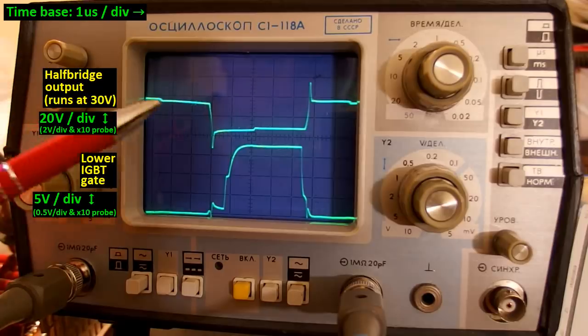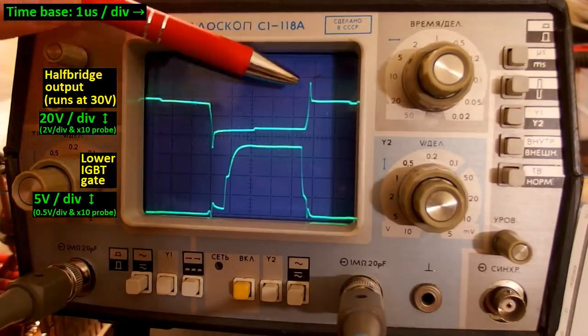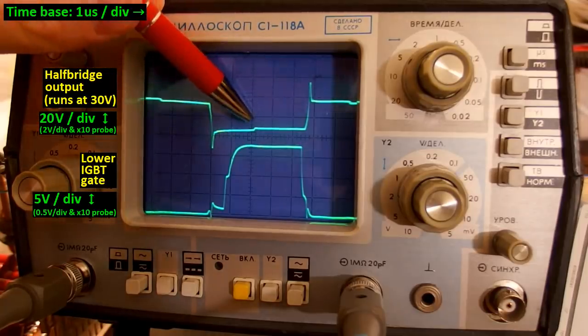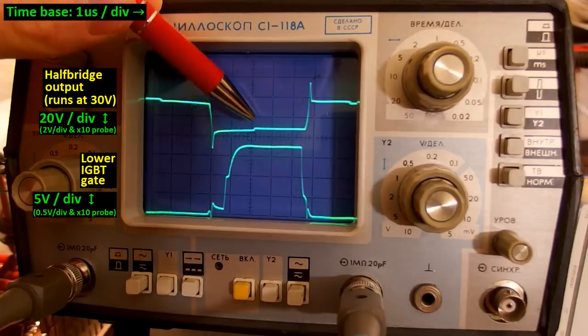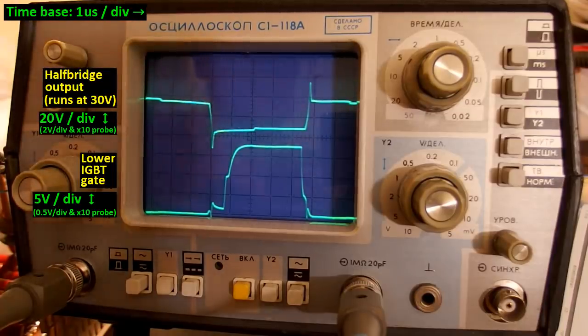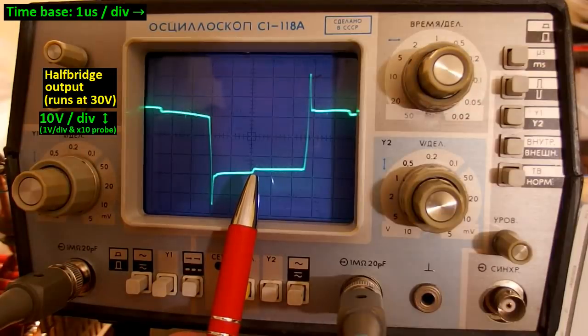When the transistors turn off, the voltage overshoots here and here for the other transistor. And this tiny notch is probably when the current stops going through the diode in the transistor and starts going through the actual transistor. Let's zoom it. And this notch happens just a little bit before the middle of the pulse.